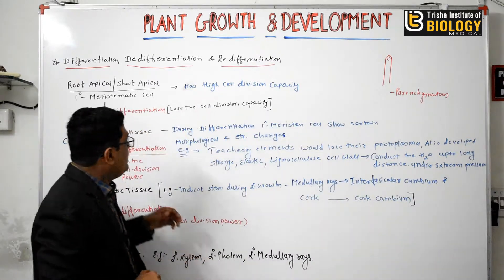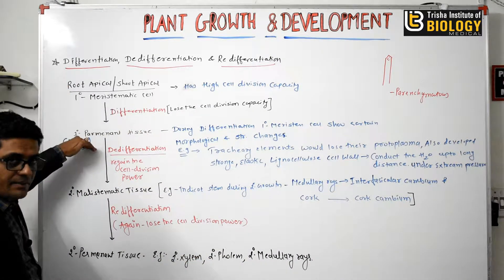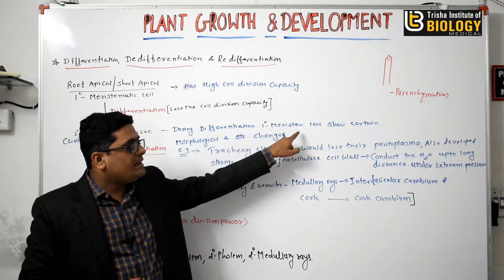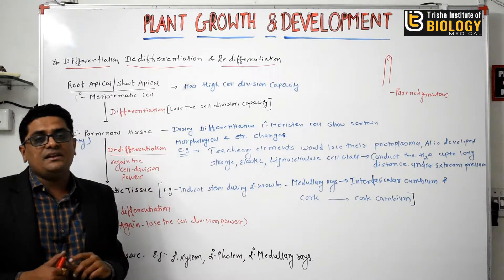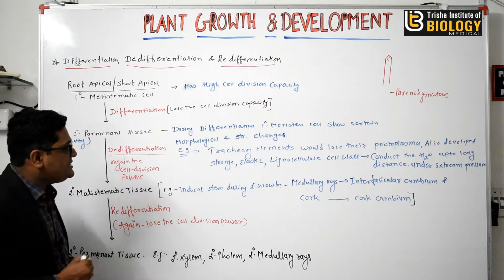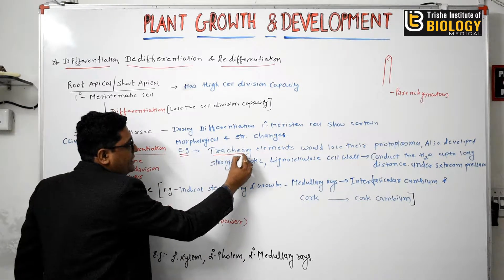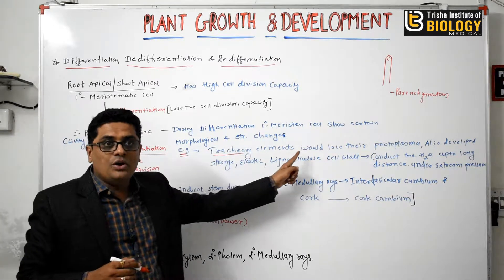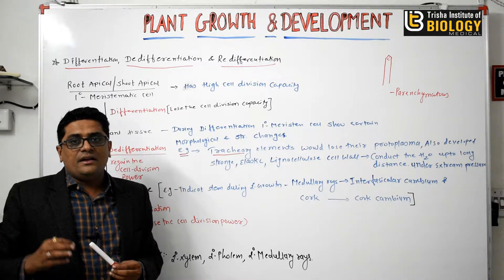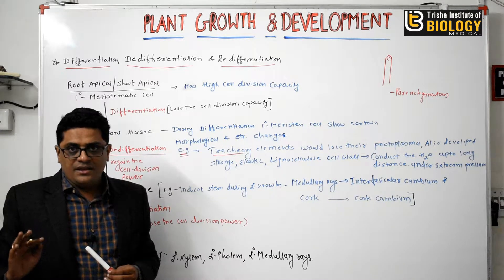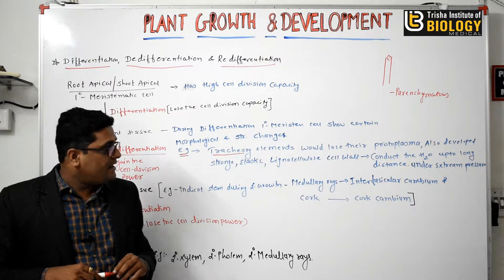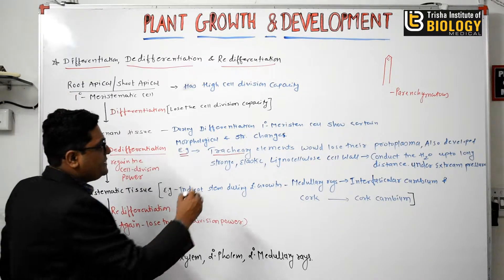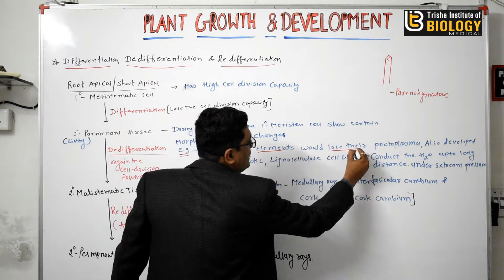Now during differentiation, when the meristematic cell converts into permanent tissue, it shows certain changes. The primary meristematic cell shows certain morphological and structural changes. For example, the tracheal element — that is the xylem element — loses its protoplasm. We all know that in xylem vessels and xylem tracheids, they do not possess protoplasm; they are dead tissue. So during the conversion of primary meristem to primary permanent tissue, the tracheal elements lose their protoplasm.